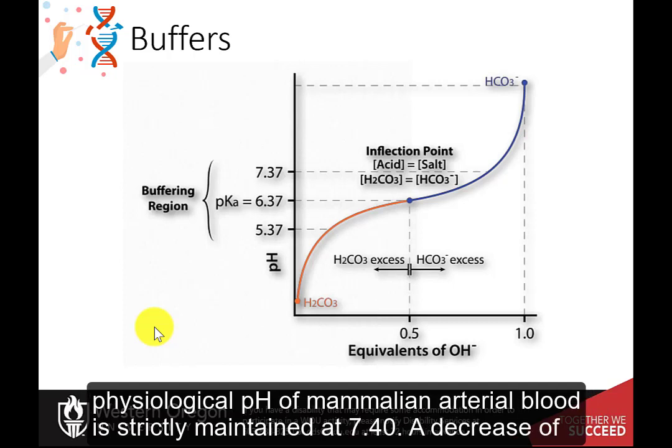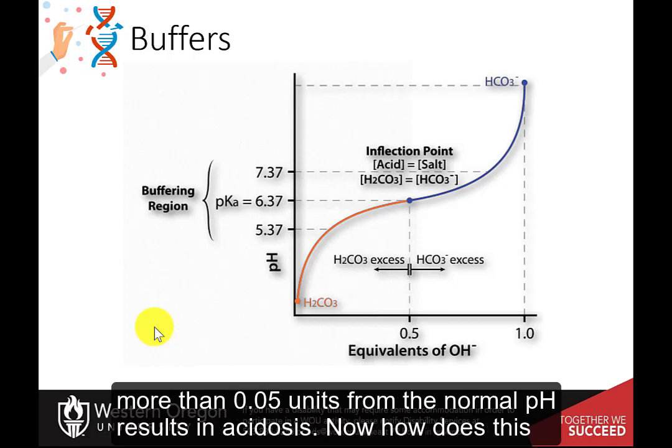The normal physiological pH of mammalian arterial blood is strictly maintained at 7.40. A decrease of more than 0.05 units from the normal pH results in acidosis.